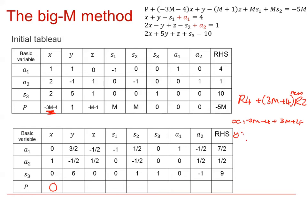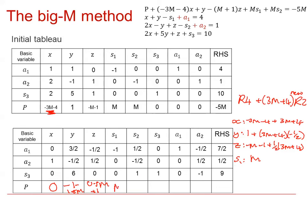For the y element: 1 plus (3m plus 4) times negative one half gives minus 1 minus 1.5m. For z: minus m minus 1 plus one half times (3m plus 4) gives 0.5m plus 1. For s1: we get m. For s2: m plus (3m plus 4) times negative one half gives negative 0.5m minus 2. For s3: we get 0.